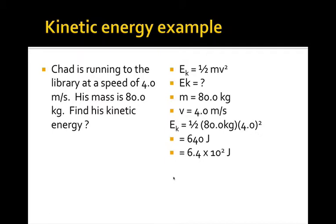And we need to always remember to write our answers in the proper number of significant digits. Since 2 is the smallest number of significant digits in our original data, we need to answer our question with two significant digits. So we will change the 640 to 6.4 times 10 to the 2 joules.